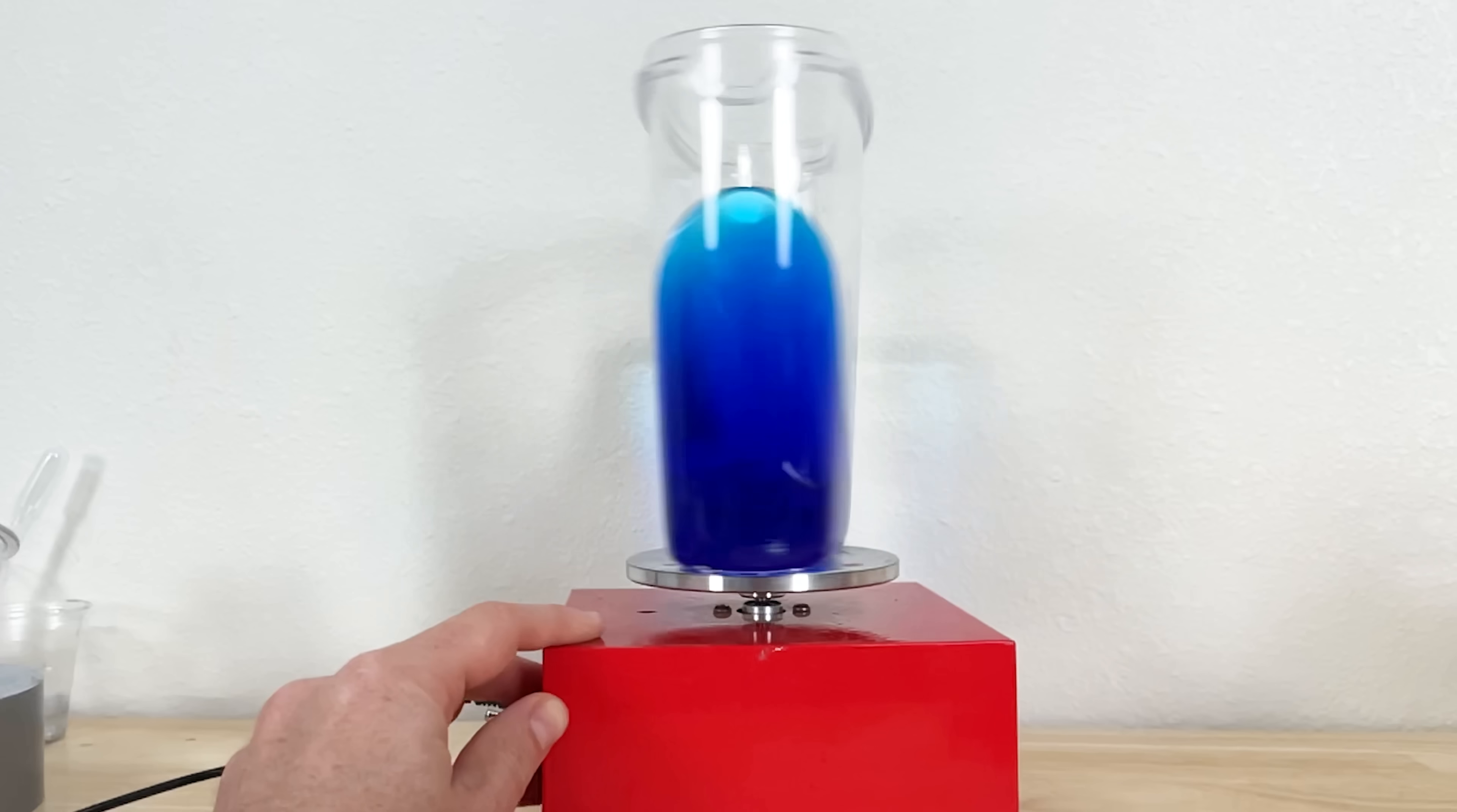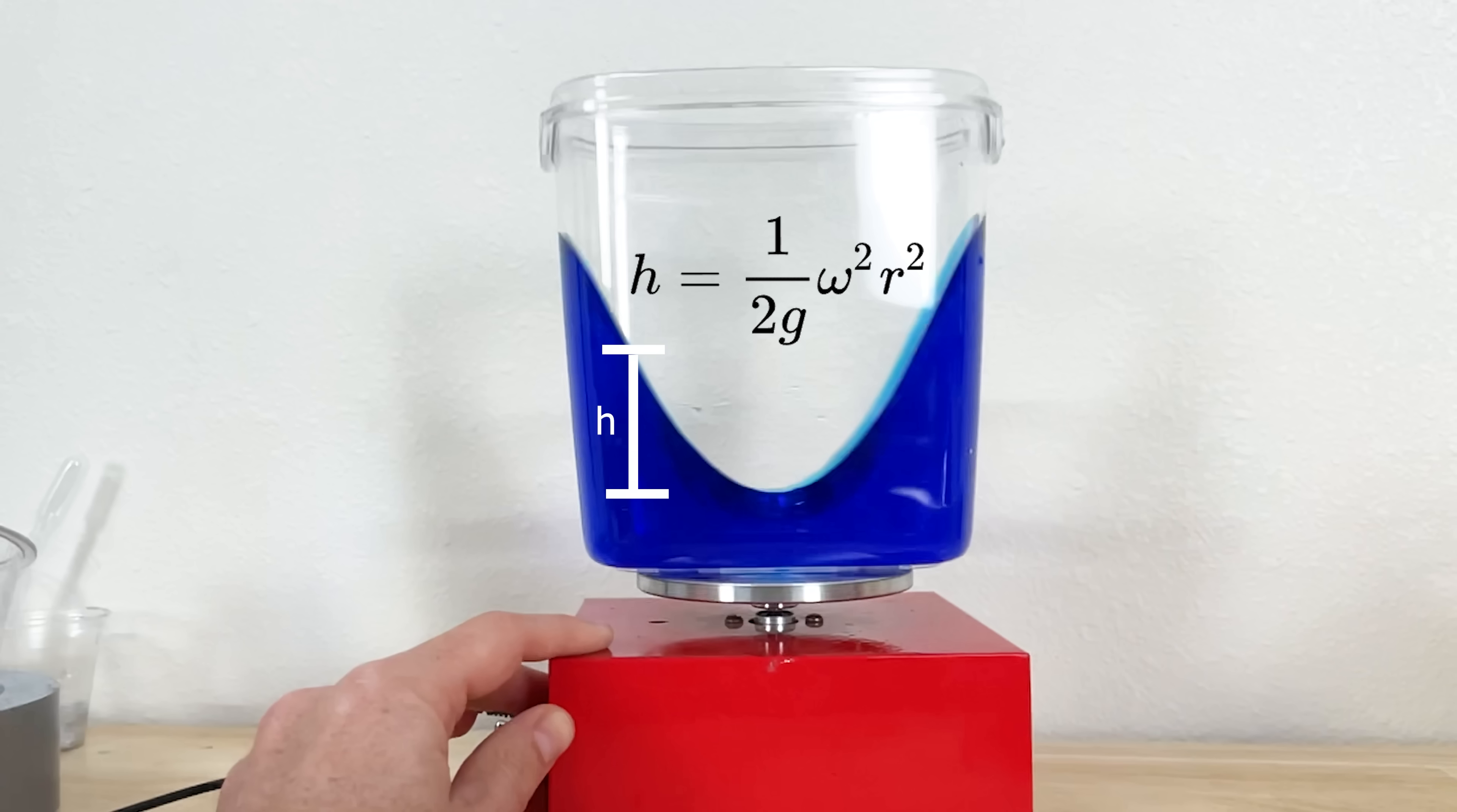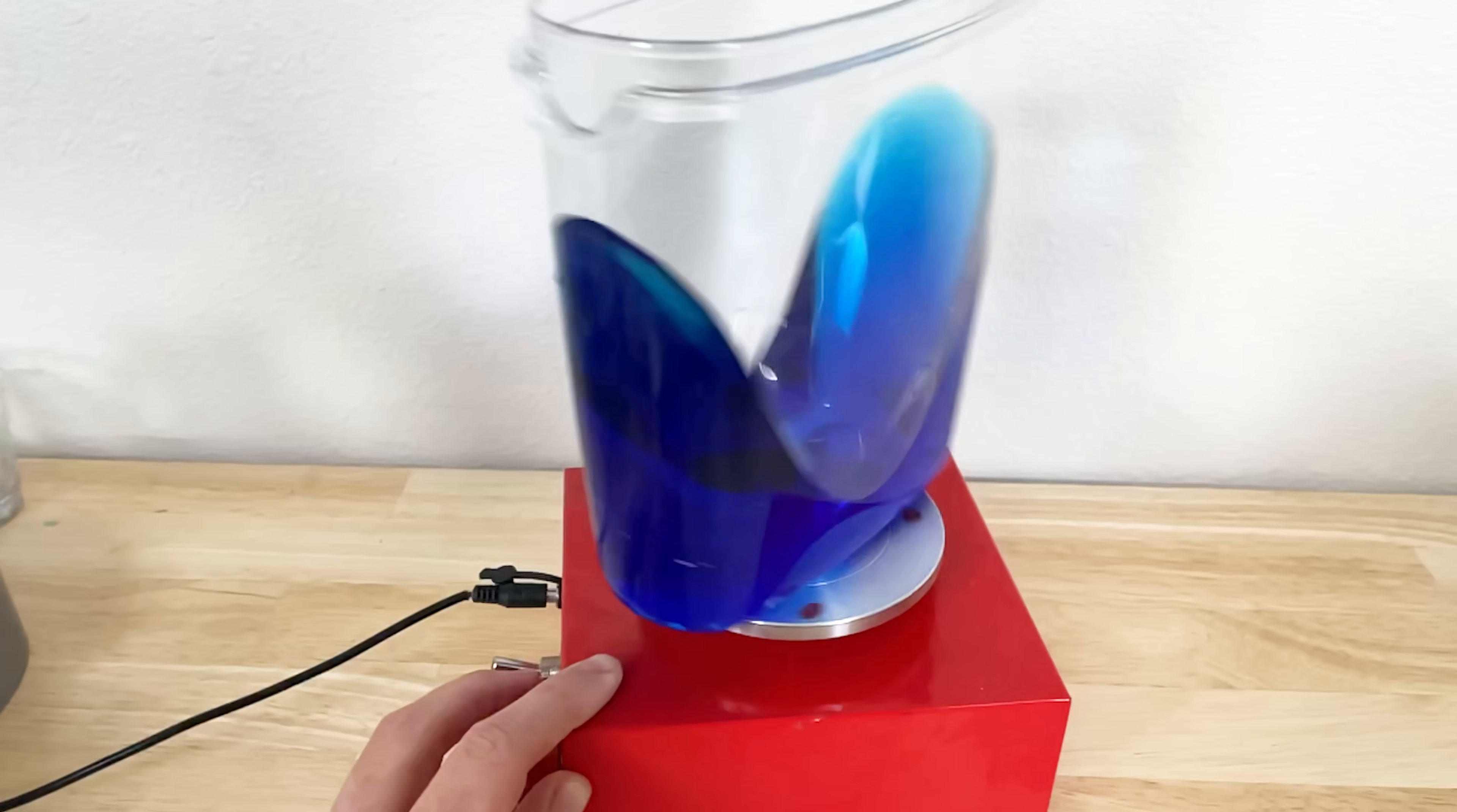Using the buoyant forces and the force of gravity, you can find that the height of the liquid at any point is just 1/2 times the gravitational constant times the rotational speed of the liquid squared times the radius squared. So you can see this is actually the definition of a parabola. Some constant times R squared.